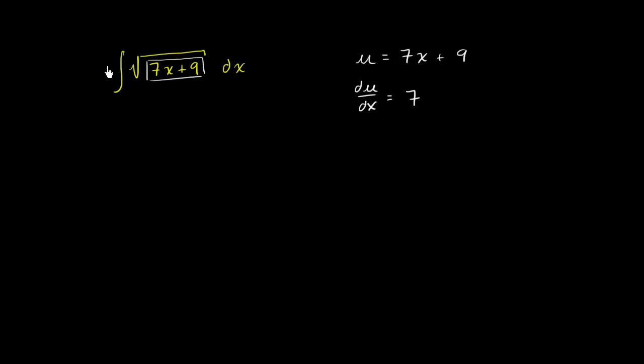So do we see a 7 lying around anywhere over here? Well, we don't. But what could we do in order to have a 7 lying around, but not change the value of the integral? Well, the neat thing, and we've seen this multiple times, is when you're evaluating integrals, scalars can go in and outside of the integral very easily.